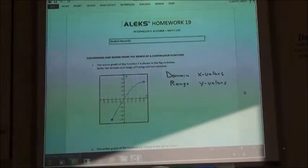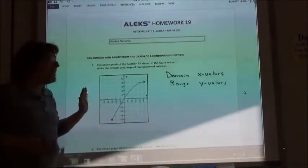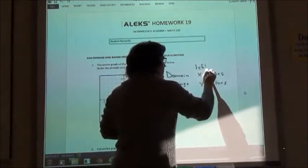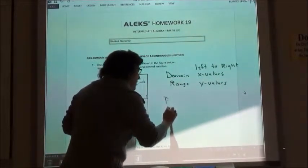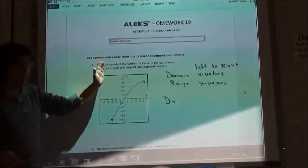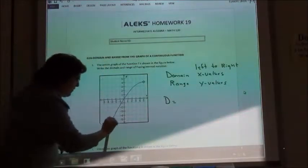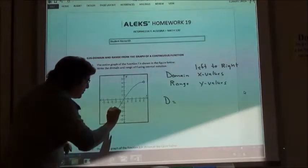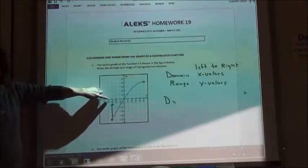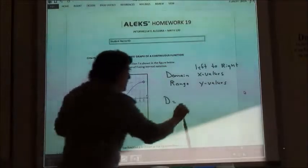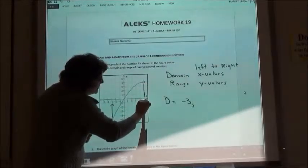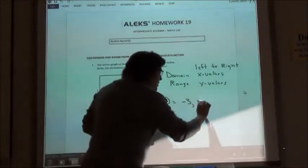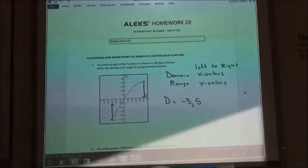When you think about your x values, you're thinking about the x axis and the x axis goes from left to right on your graph. So when I'm going to do my domain, I'm going to look for my farthest left point. The farthest left point on my x axis would be at negative 3 to my farthest right point. The farthest to the right I go on my x axis would be at 5. Now we have to do that interval notation thing, so we have to put the end marks on there.